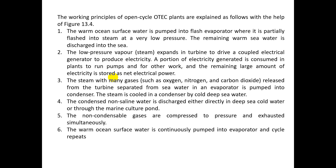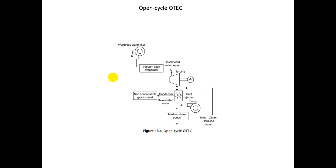The steam is pumped back into the condenser, where it is cooled by cold deep sea water, producing non-saline condensate water. This condensate is discharged either directly into the deep sea or through marine culture ponds. The non-condensable gases are compressed and exhausted simultaneously. Warm sea water is continuously pumped into the evaporator and the cycle repeats. This pumping system is used for electricity generation — this is the overall cycle of the open cycle OTEC.